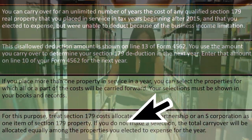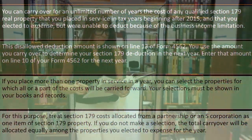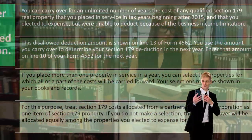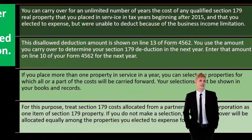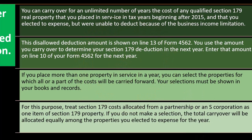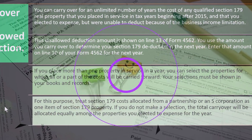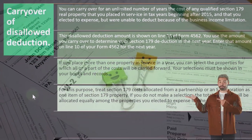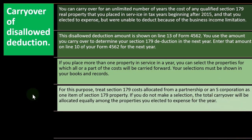For this purpose, treat Section 179 costs allocated from a partnership or an S corporation as one item of Section 179 property. When we think about different kinds of business entities, the partnership is a flow-through entity, as is an S corp — meaning they flow through from the other tax return instead of being taxed at the S corporation or partnership level. They flow through with a K-1 form to the Form 1040s and are taxed there. The total carryover will be allocated equally among properties you elected to expense for the year.